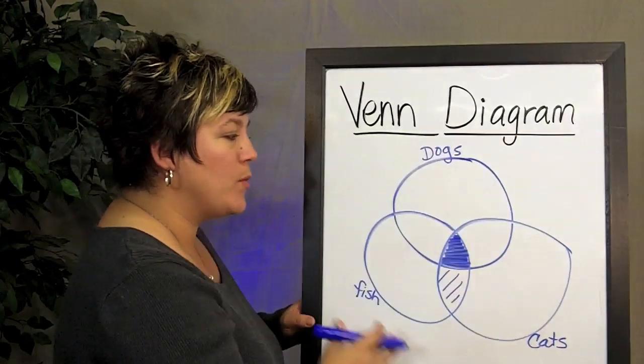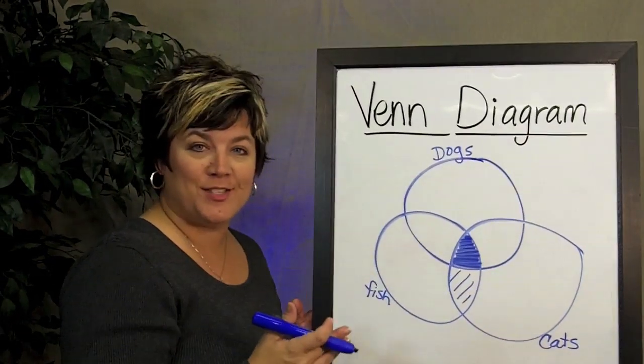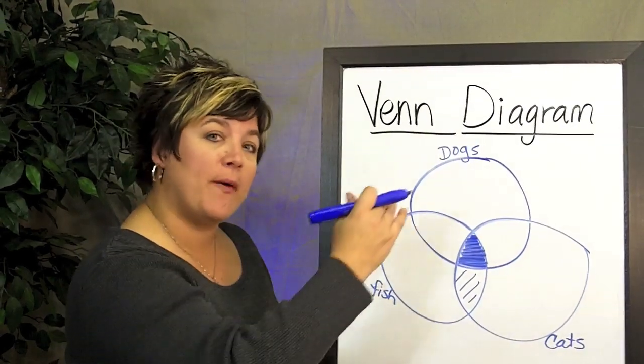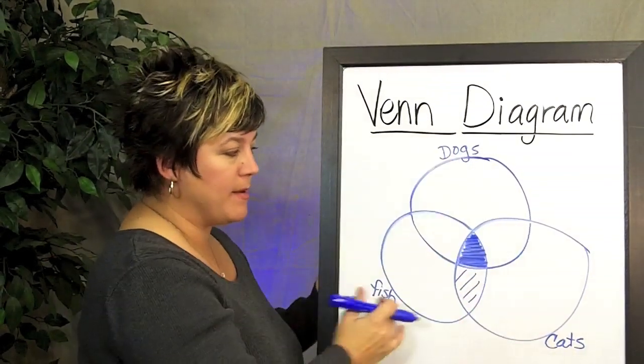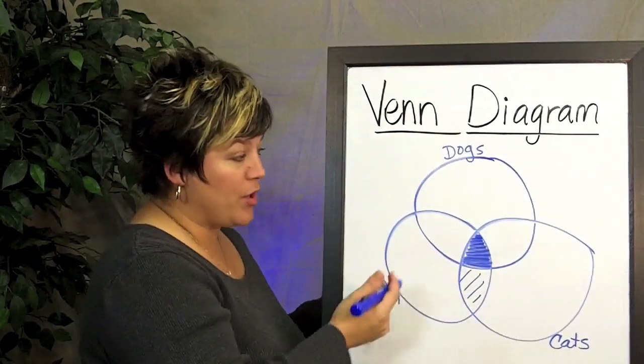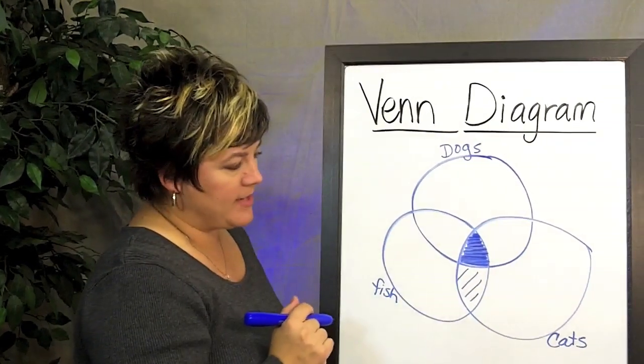So this is how we would work it with three different things to compare. Still a Venn Diagram. It's a little more complicated because you really have to think about the relationships between the items and then where you would place the people's name or the data that you're collecting within that Venn Diagram.